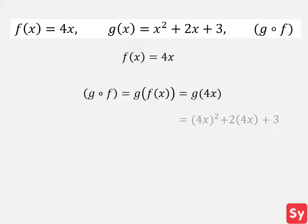So we are plugging in 4x for x in g of x. Now we simplify and get 16x squared plus 8x plus 3, which is our answer.